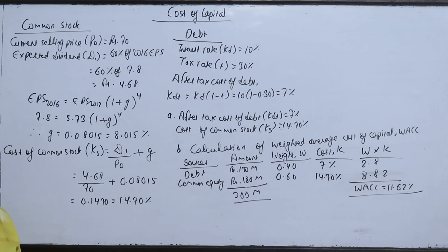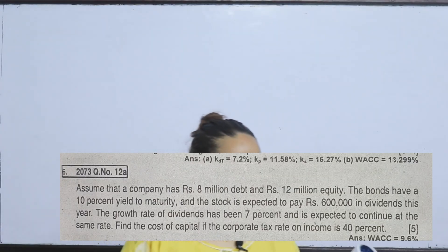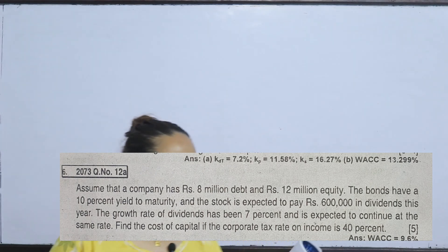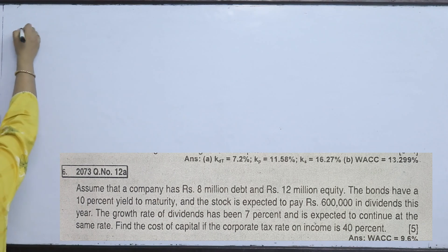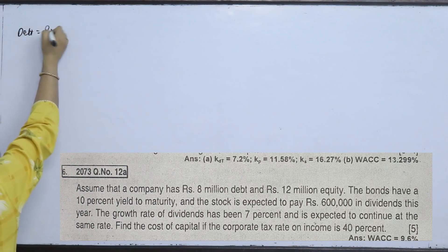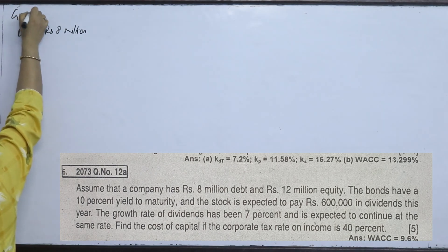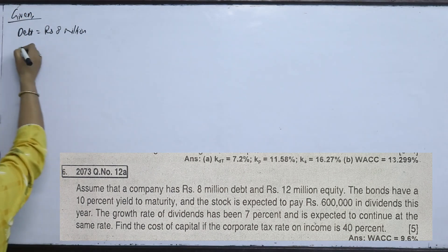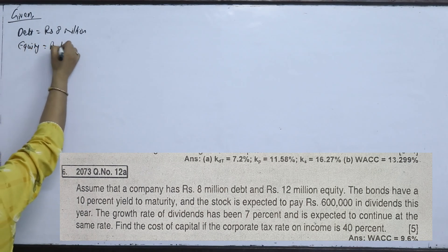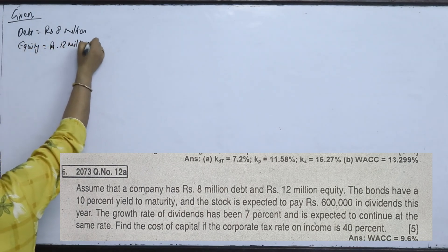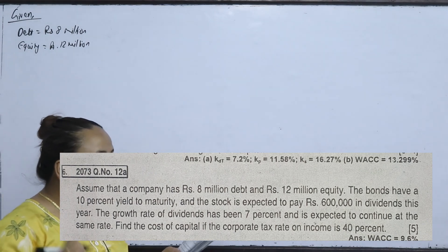Another question: assume a company has Rs. 8 million debt and Rs. 12 million equity. The bond has a 10% yield to maturity (YTM).